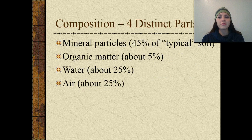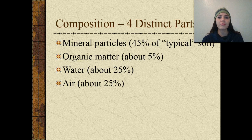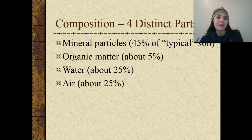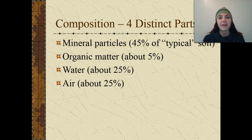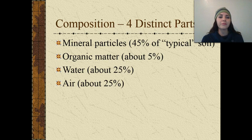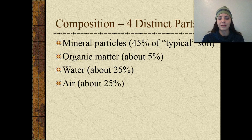Soil is composed of four distinct parts. We have the mineral particles, which compose about 45% of the typical soil sample. Then we have organic matter — things that have been living or alive, they contain carbon, and that composes about 5% of soil. Water and air both compose about 25% of soil each.